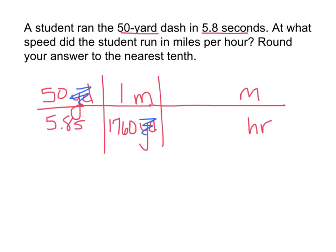But now you want to get rid of the seconds. So where are the seconds located? The unit seconds is on the bottom. That means we're going to have to have seconds on top. And we already know we have to convert it to hours. So what do you know about the number of seconds in an hour? You might have to look it up. In one hour how many seconds are there? 3,600. So now the second units are gone and what are you left with? You're left with on top 50 times 3,600 and 5.8 times 1,760.